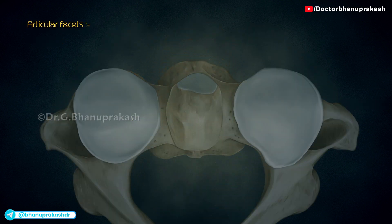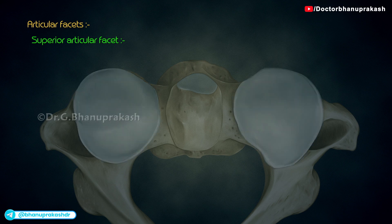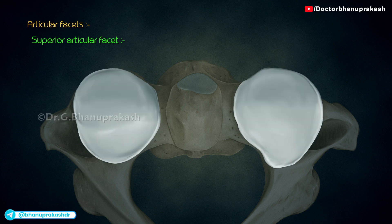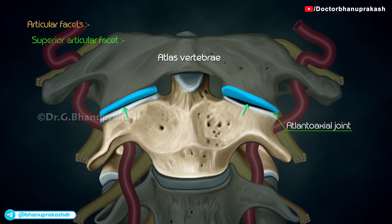Superior articular facet: it occupies the upper surface of the body and pedicle. It is a large, flat, circular facet which is directed upwards and laterally. Laterally, it overhangs the foramen transversarium. It articulates with the inferior facet of atlas vertebrae to form the atlanto-axial joint.